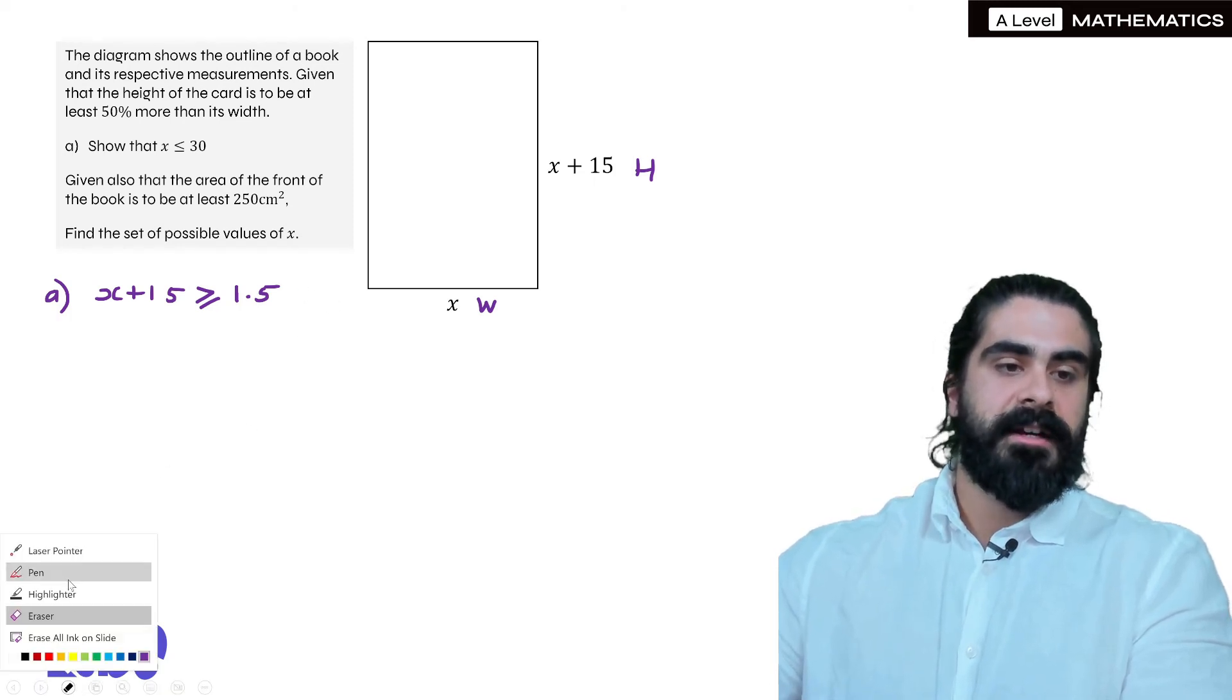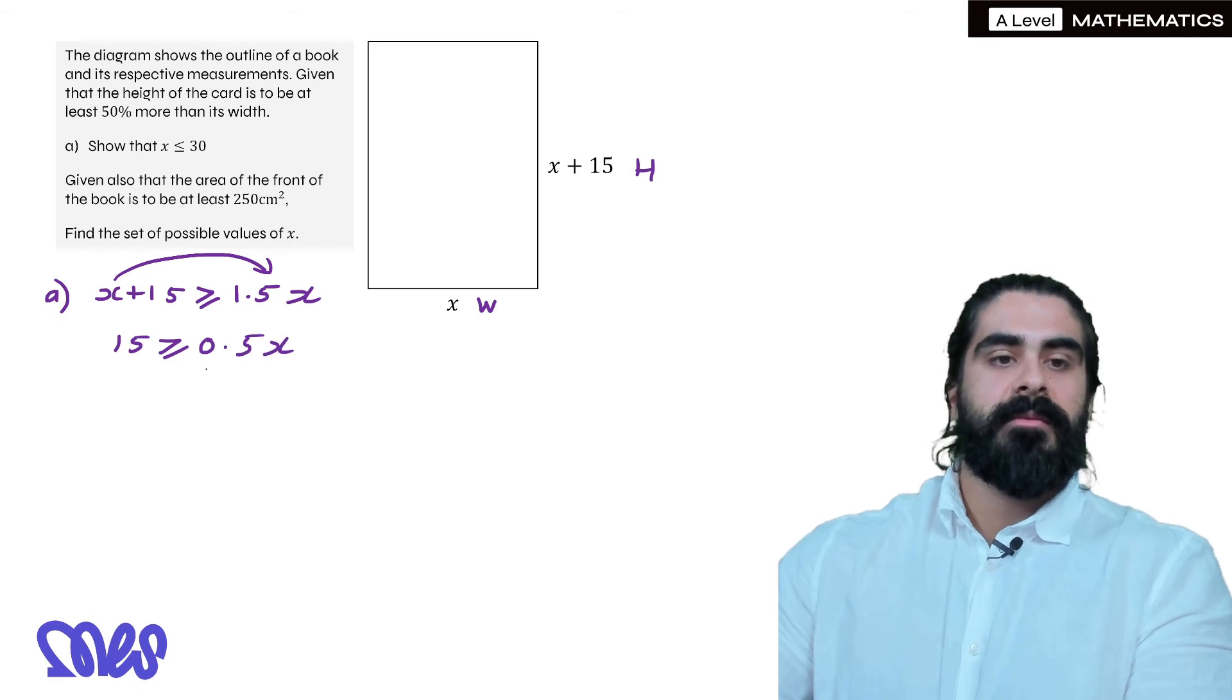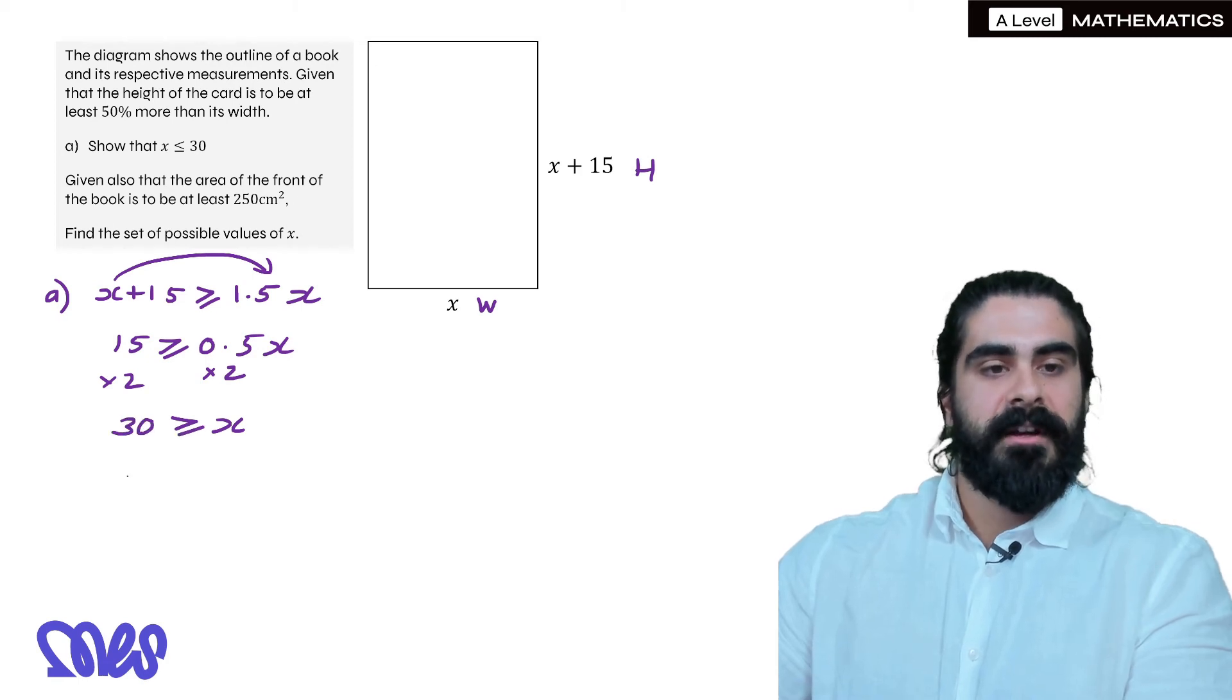Which is actually x not w. Then from there we can go ahead and rearrange. So move this x over to this side, so we get 15 is greater than or equal to 0.5x, then we times both sides by 2, so we get x is less than or equal to 30, when you write the other way around you get the same as what they've got.